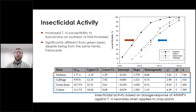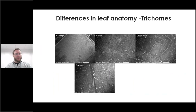We repeated this over and over again and continually found the same result. This was particularly interesting because green bean is very closely related to soybean, in the same family Fabaceae. However, the insects had dramatically different susceptibility on the soybean compared to all the other crops we tested. So we wanted to determine why exactly we had this enhanced activity.